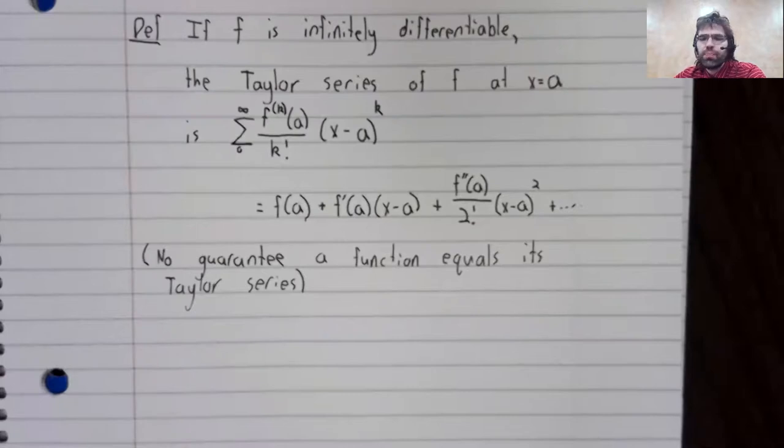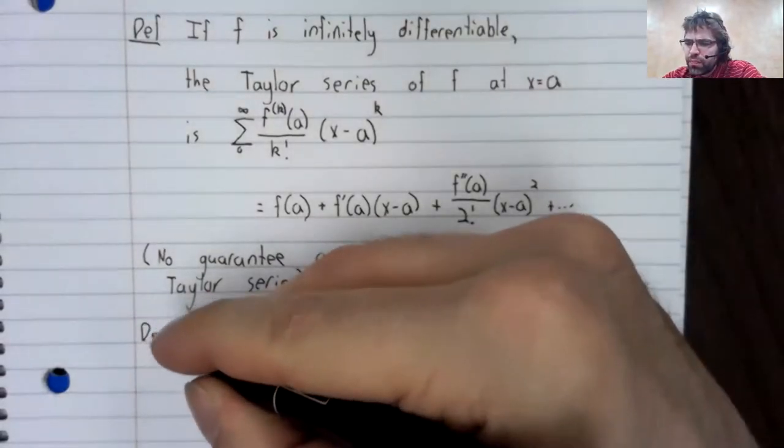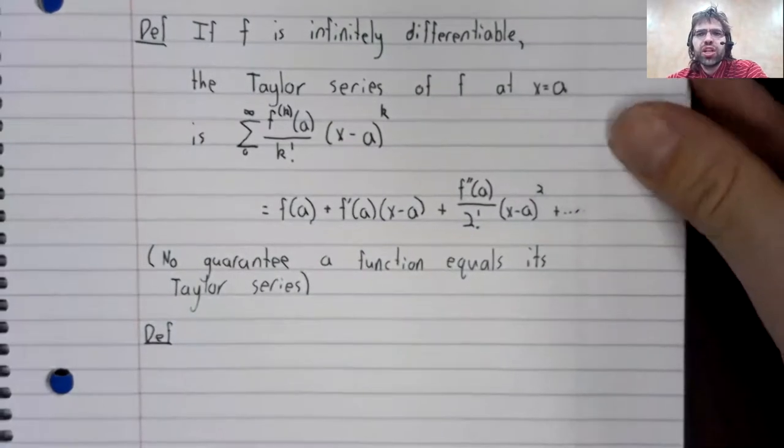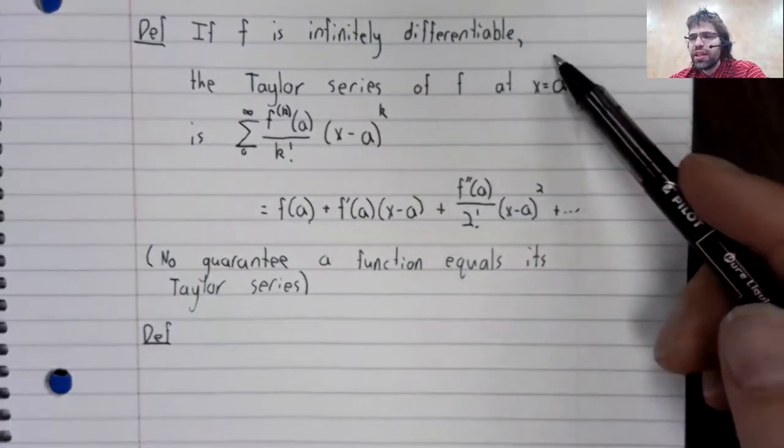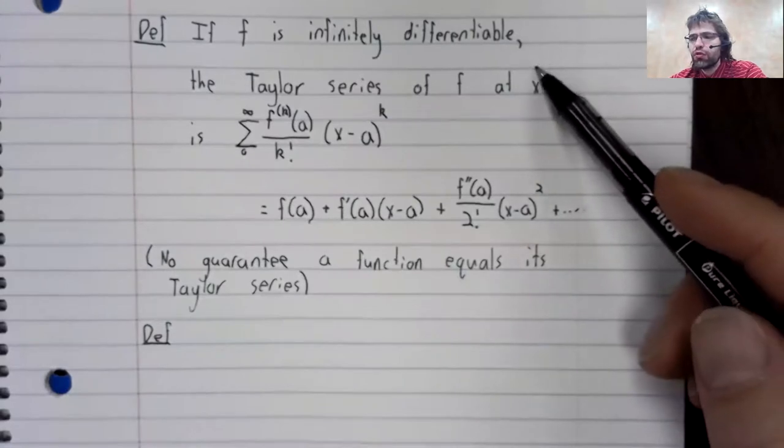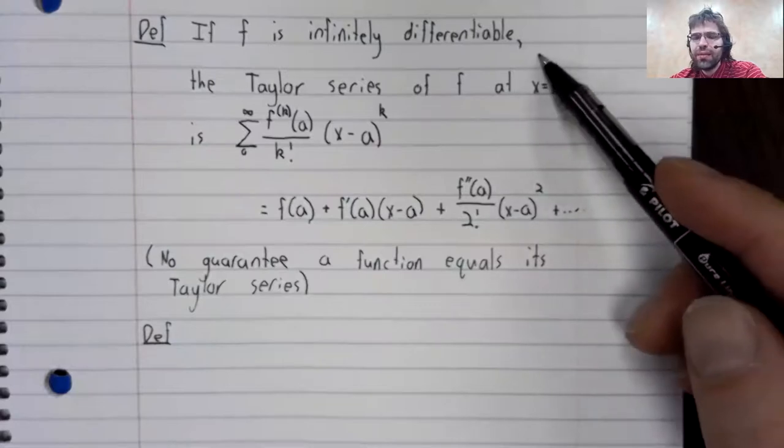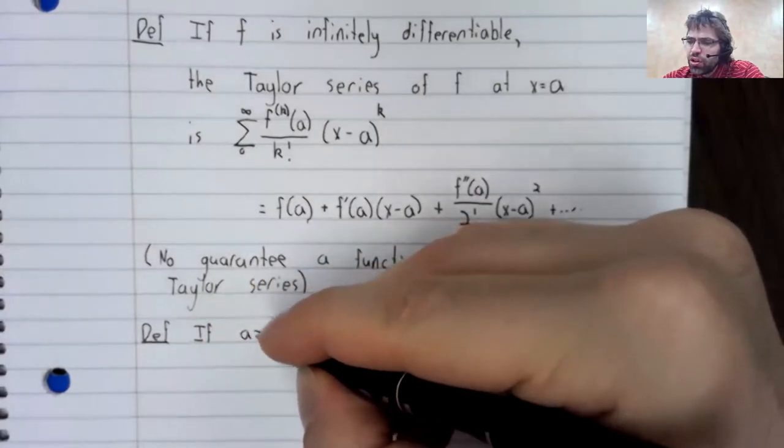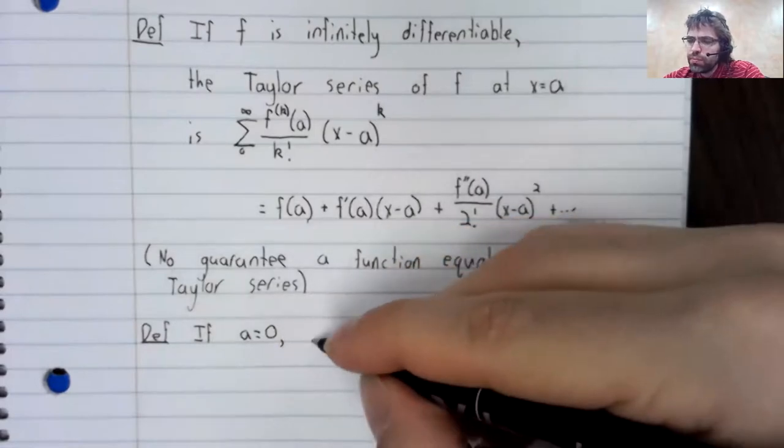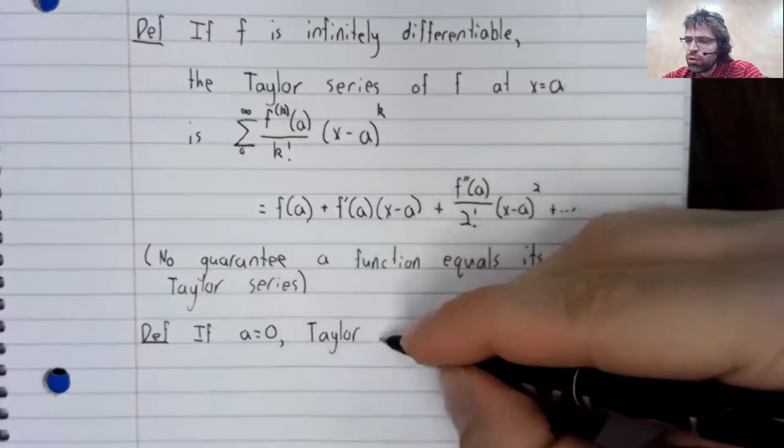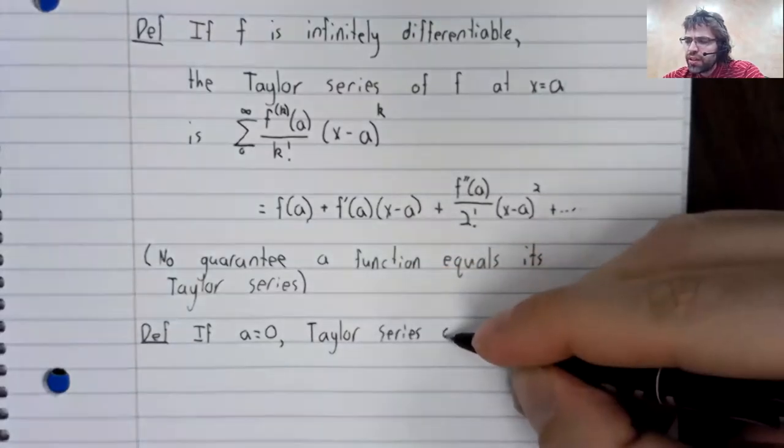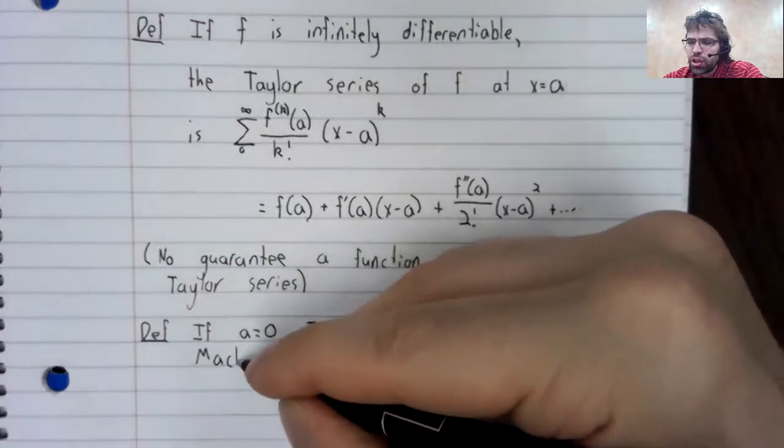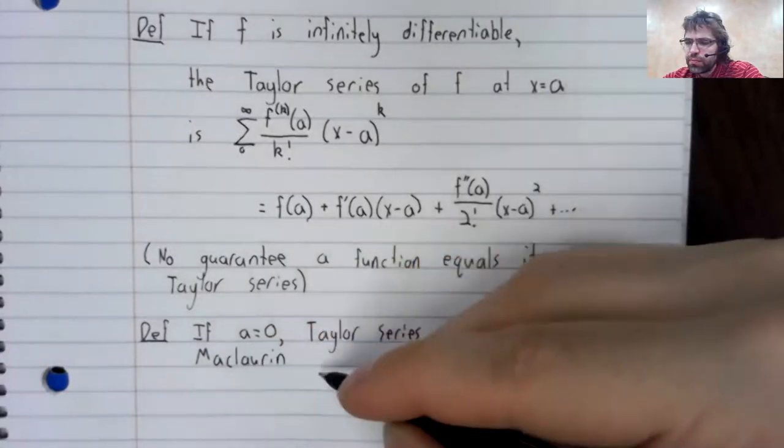Properly speaking, we have a second definition. We shouldn't talk about a function's Taylor series because it has a different Taylor series depending on where this A is. If A equals zero, the Taylor series gets a name. It's called the Maclaurin series.